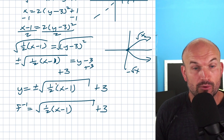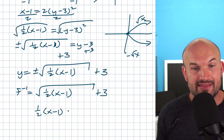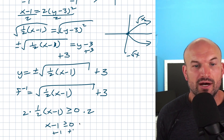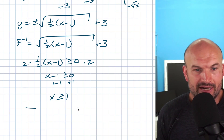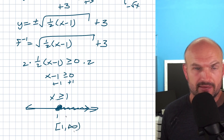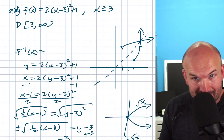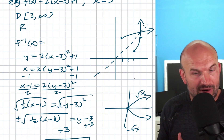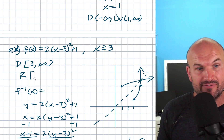To find the domain of f⁻¹(x), set the radicand ≥ 0: (1/2)(x − 1) ≥ 0. Multiply by 2: x − 1 ≥ 0, so x ≥ 1. The domain of the inverse is [1, ∞). Since the domain of the inverse is the range of the original function, the range of f(x) is from 1 to infinity. Looking at the graph confirms this — the vertex is at height 1, and the graph only goes upward from there. We've verified it both graphically and algebraically using the inverse.